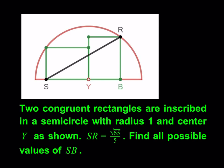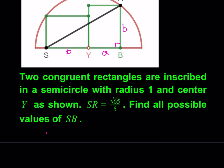Two congruent rectangles are inscribed in a semicircle with radius 1 and center Y as shown. So let's go ahead and start by naming this side length A and this one B. From here we are given the length of SR, so I can just go ahead and use the Pythagorean theorem. I can write down A plus B quantity squared plus B squared equals SR squared which is 65 over 25, and I can write it as 13 over 5.